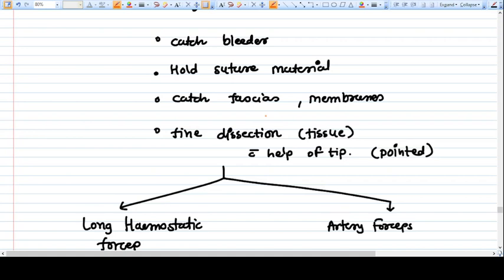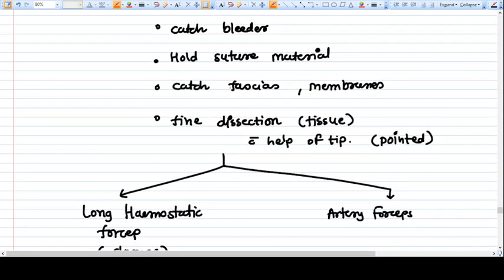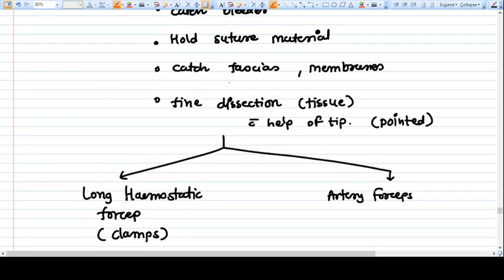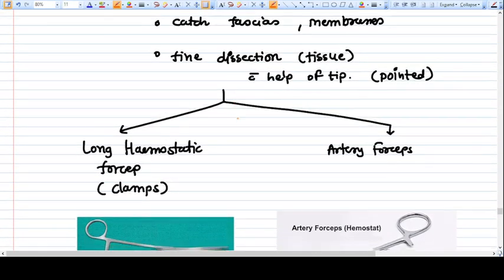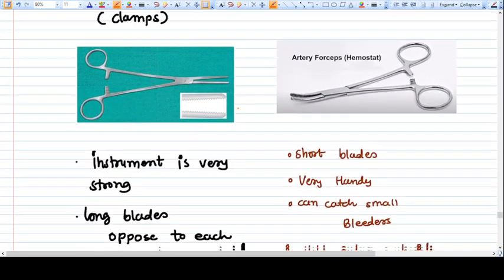If you try to catch an abdominal wall with artery forceps, you can't hold it very strongly - it will slip. And if you try to give more pressure, then it will rupture the structure. So you can't use artery forceps to hold structures like abdominal wall or fascias perfectly, though you can hold it, but not as perfectly as we want.